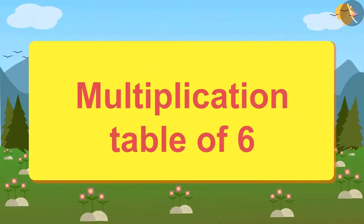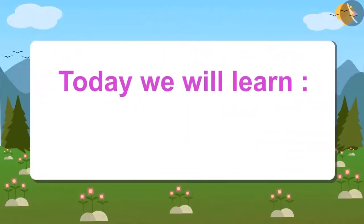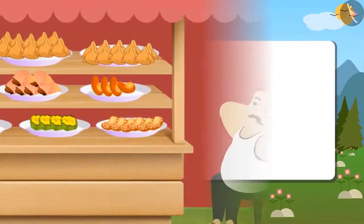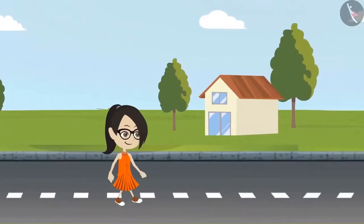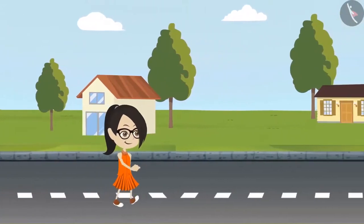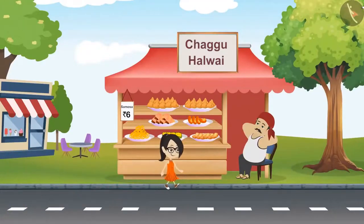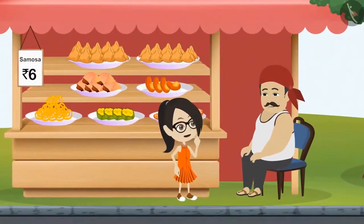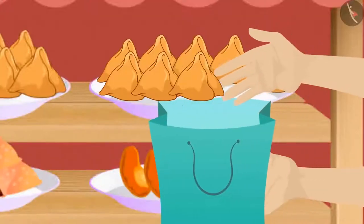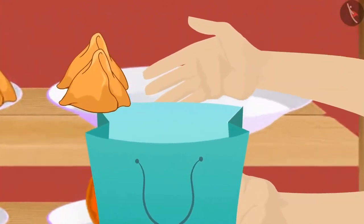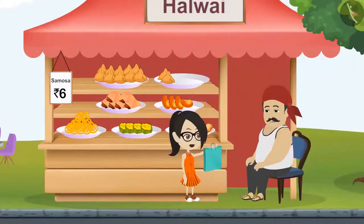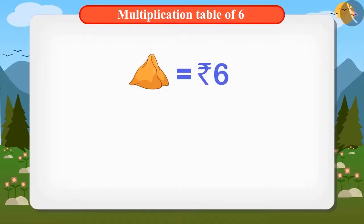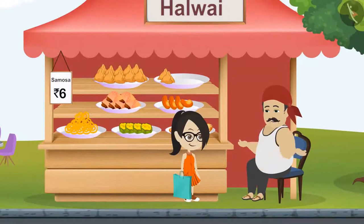Multiplication Table of 6. Today we will learn the multiplication table of 6. Chaggu Halwai makes very good samosas. Vandana is going to get samosas from Chaggu Halwai's shop. Uncle, can you give me 8 samosas? Chaggu gave Vandana 8 samosas in a packet. Take this Vandana, 8 samosas. Thank you, Uncle. How much should I pay? One samosa is for 6 rupees — at the rate of 6 rupees per samosa. Calculate and give the money for 8 samosas.